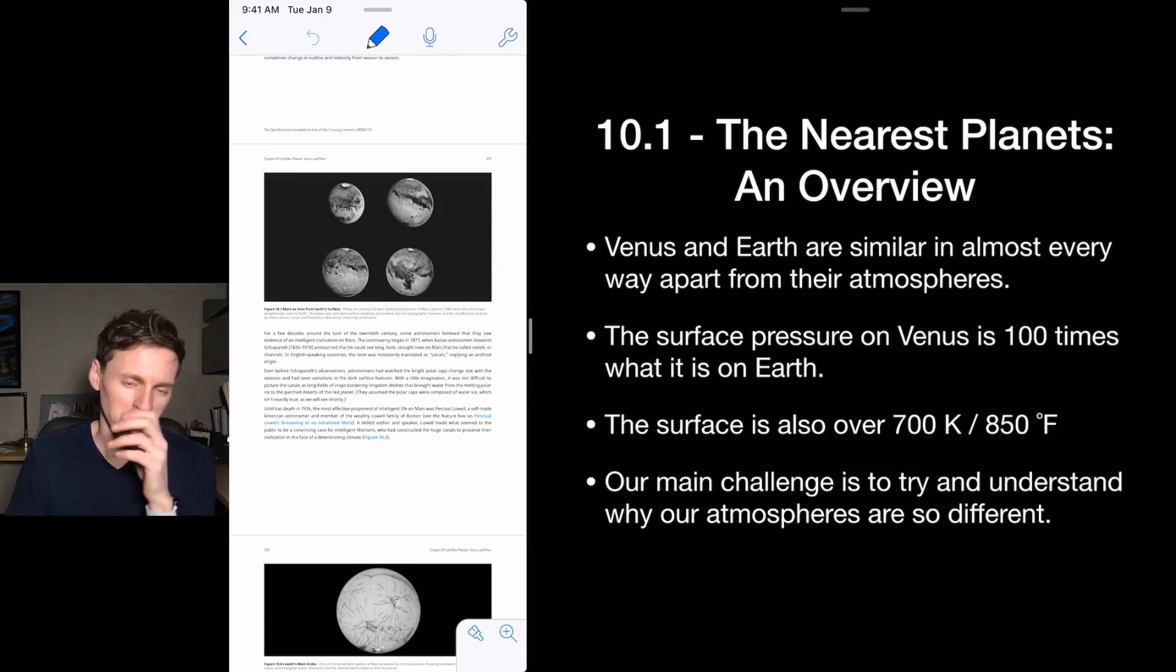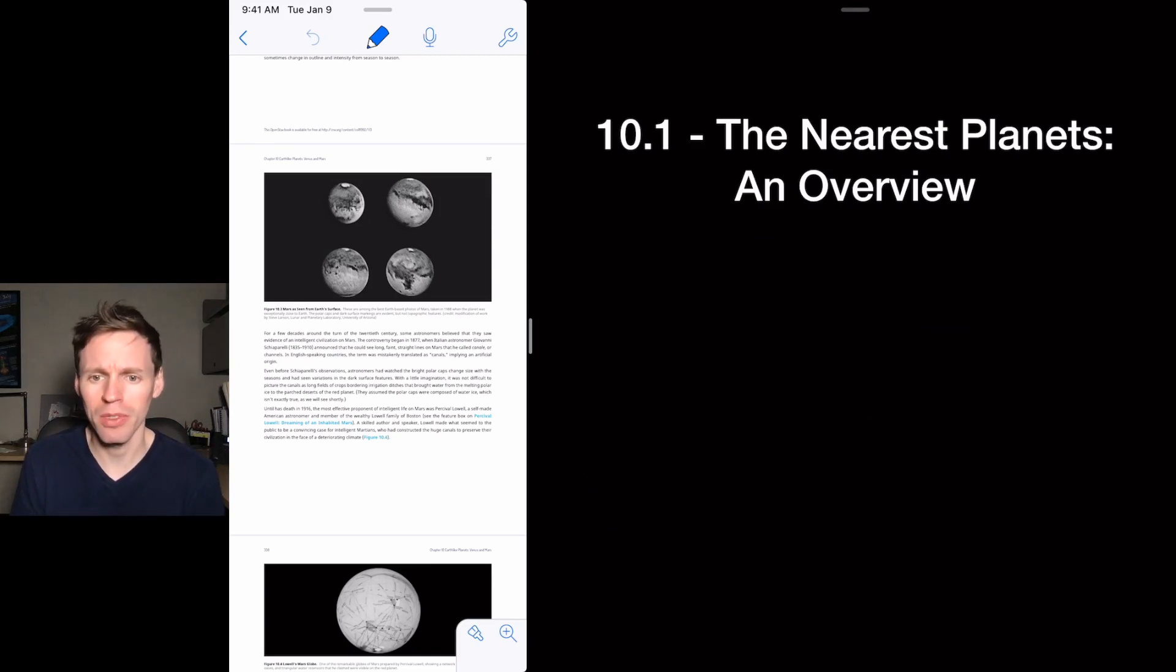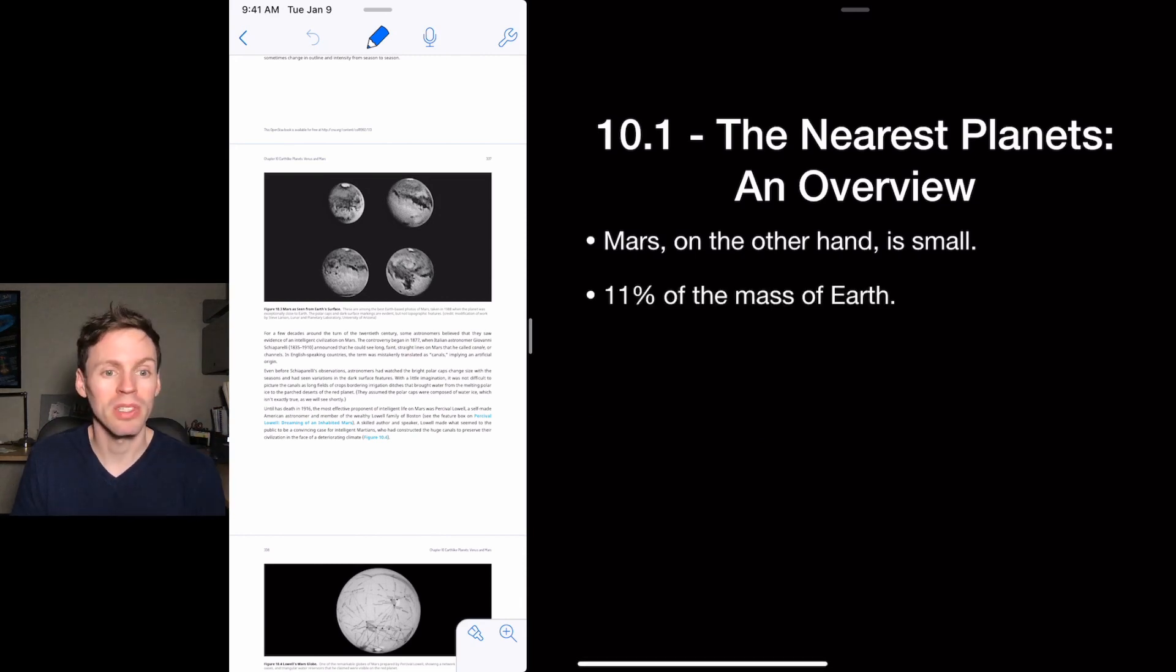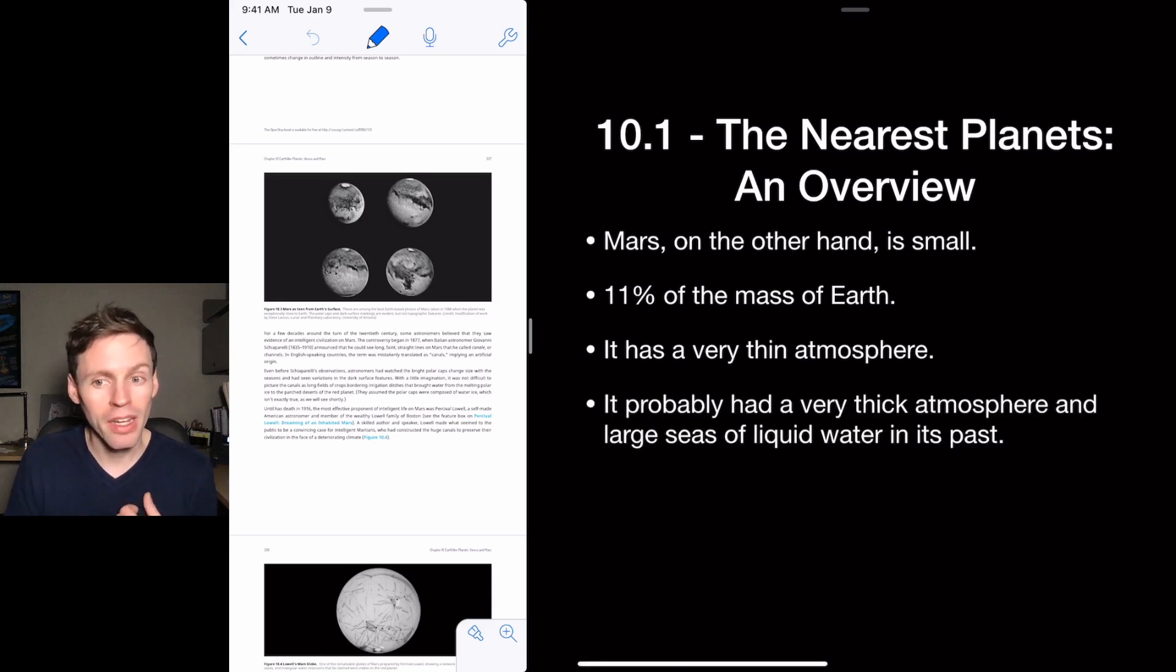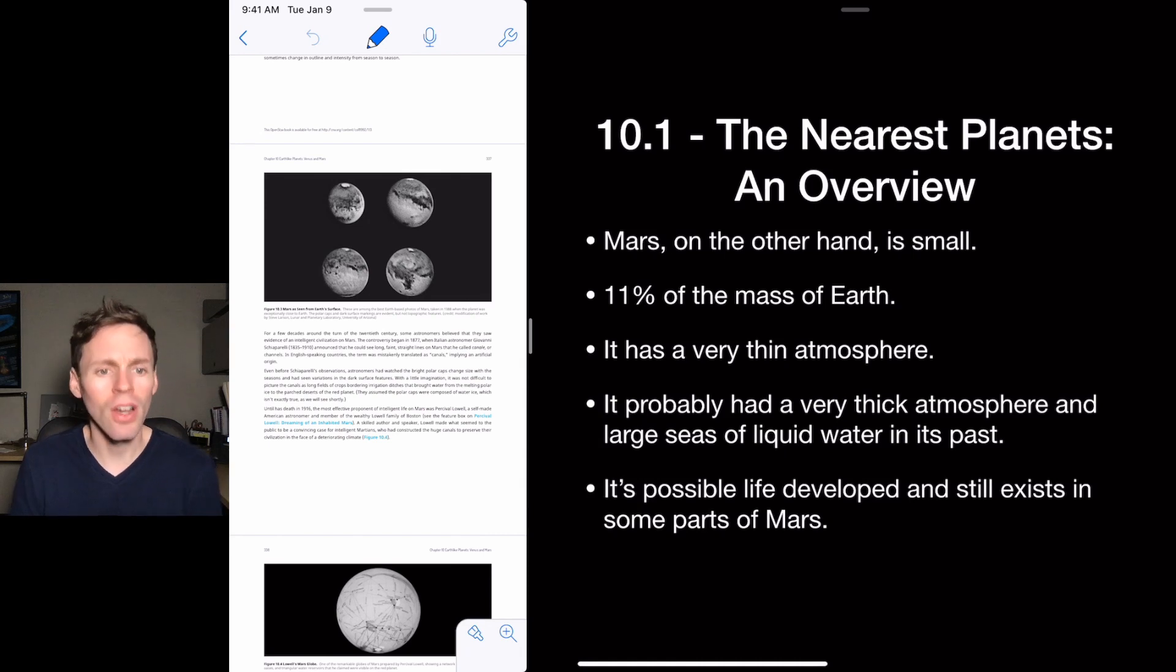Our main challenge as an astronomer, since that's what we all are, is to understand why the atmospheres are so different. Why is Venus atmosphere so different from Earth and Mars? How did it get such a thick atmosphere? Mars on the other hand is a small planet. It's like 11% of the mass of the Earth. That's tiny. It's a very thin atmosphere. It probably had a thick atmosphere and oceans in the past. It's gone now. It's dead.